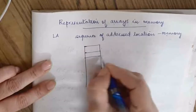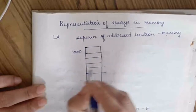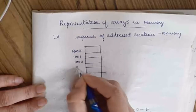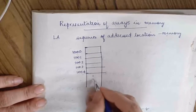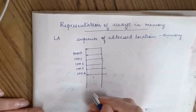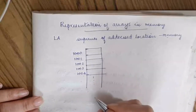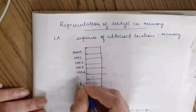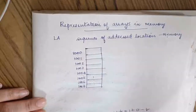Let the array be stored starting at address 1000. The consecutive address locations are 1001, 1002, 1003, 1004, 1005, 1006, and 1007. Each address location holds a particular element of the array.